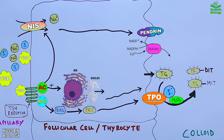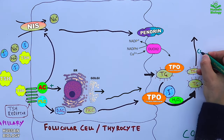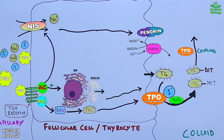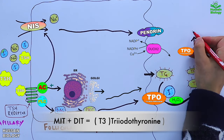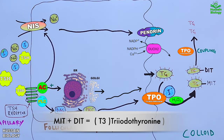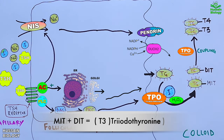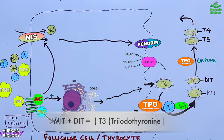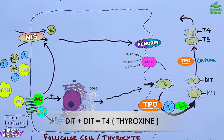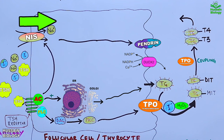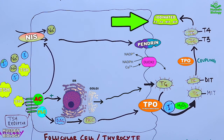TPO also drives the coupling reaction in the colloid. One molecule of MIT plus one molecule of DIT produces triiodothyronine (T3). The coupling of two DIT molecules produces thyroxine (T4) — DIT plus DIT gives us T4. So the iodinated thyroglobulin molecule now has T3, T4, MIT, and DIT bound to it.